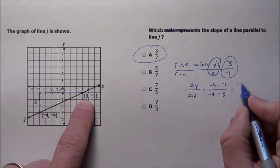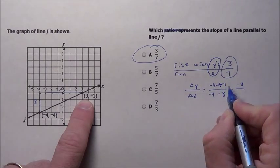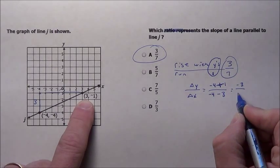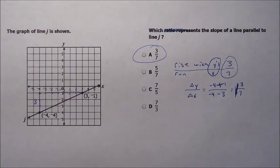Notice this changes to a plus, which gives you negative 3, because that's a plus 1. Negative 4 plus 1 is negative 3. Negative 4 minus 3 is negative 7. Negative divided by negative is just going to go away, and you'd get the same answer.